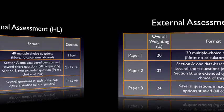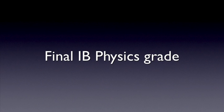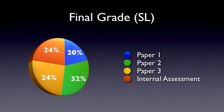At higher level, the picture is quite similar. Your final IB Physics grade combines your internal assessment score with your examination results. Here is a quick visual representation of how your final result is calculated — first for standard level, and now for higher level.